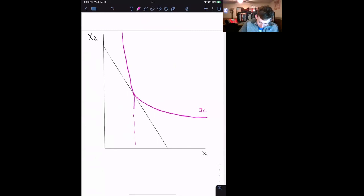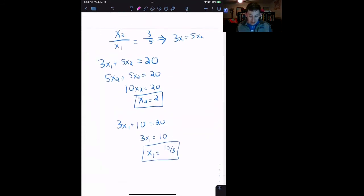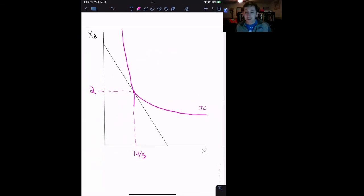And looking at this analytical solution, we know that this point right here is 10 over 3, and this point right here is 2. So now we've just done another problem where we've looked at the analytical solution and then done a quick recap of the graphical solution.